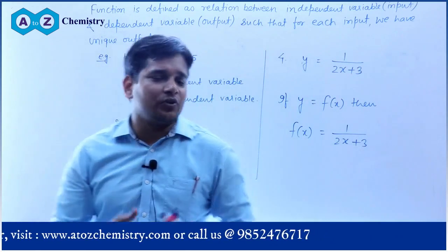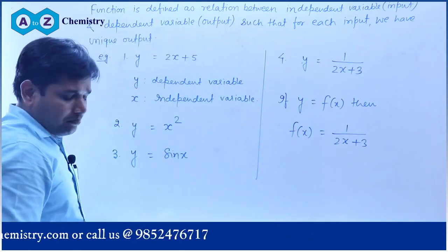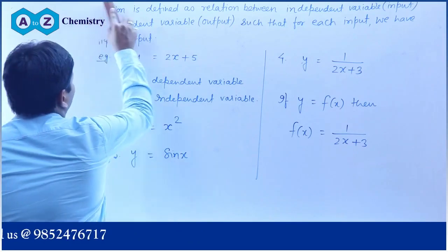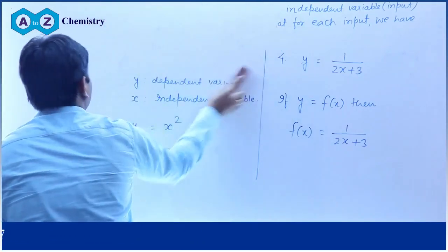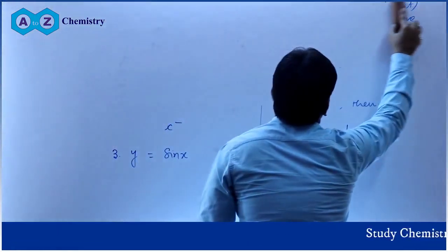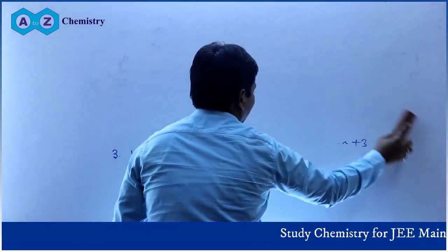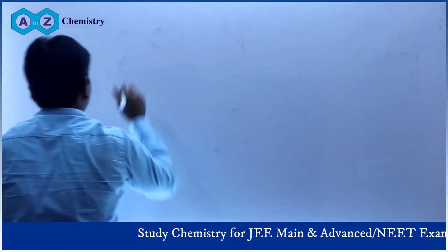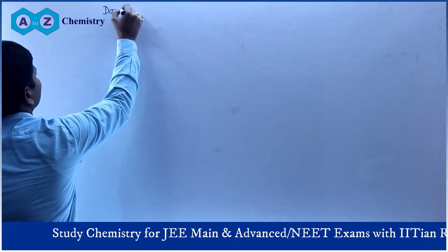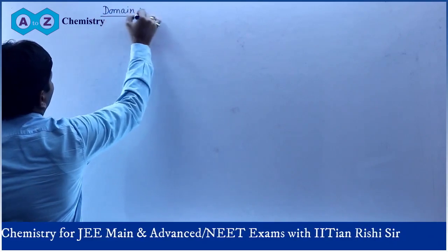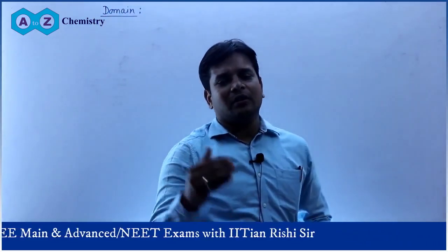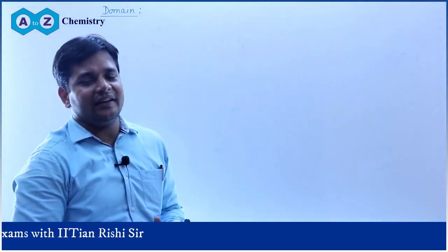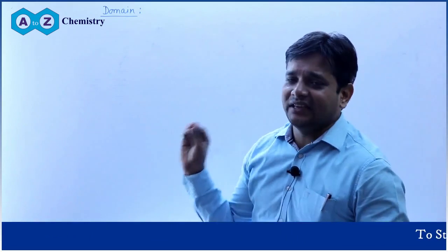Function एक relation है between independent variable — normally represented as x — and dependent variable — normally represented as y — जिसमें हर input के लिए, हर independent variable के लिए, output जो dependent variable है वो unique होना चाहिए। This is the definition of function। बात करते हैं domain and range of function का जो important characteristic है। Domain की बात करें — किसी भी function का domain, independent variable यानी x का वो सारा मान होता है जिसके लिए y real हो।